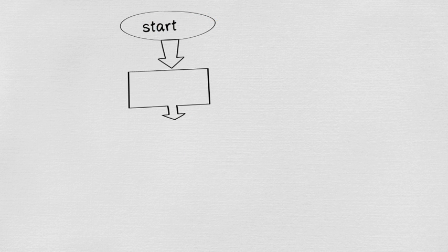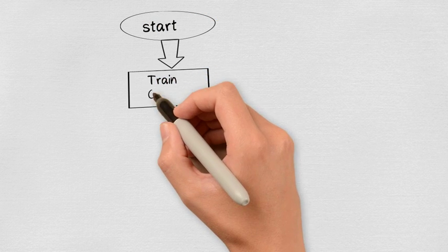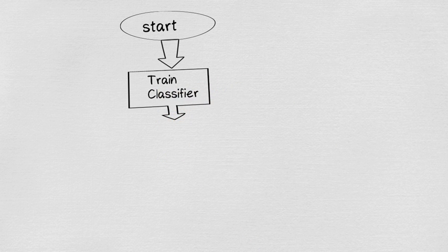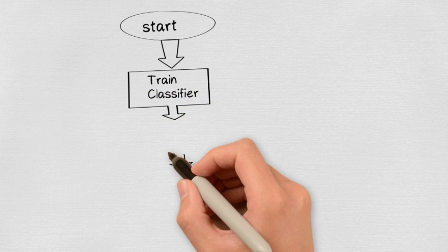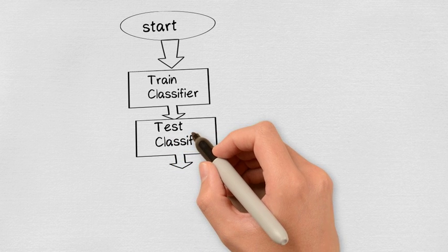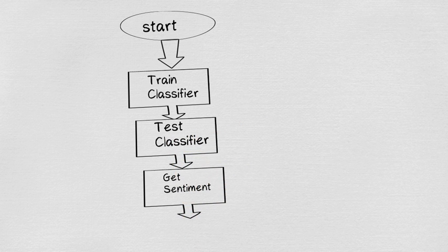Let's take a look at the project flow. Here is the flowchart of the entire project. The first step is to train the classifier with the train data with labels that is positive or negative depending upon the review. Second is the test classifier. The third is to get sentiment of a given sentence or word.